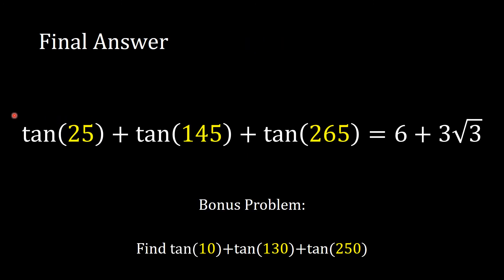We're done! The expression equals 6 plus 3 radical 3. What's remarkable is that tan(25°), tan(145°), and tan(265°) individually can't be written in a nice exact form, but their sum gives the beautiful result 6 + 3√3. For a bonus problem: find tan(10°) + tan(130°) + tan(250°). You can use the same process, noting that 10 is 30 divided by 3. Put your answer in the comments. Thanks for watching!